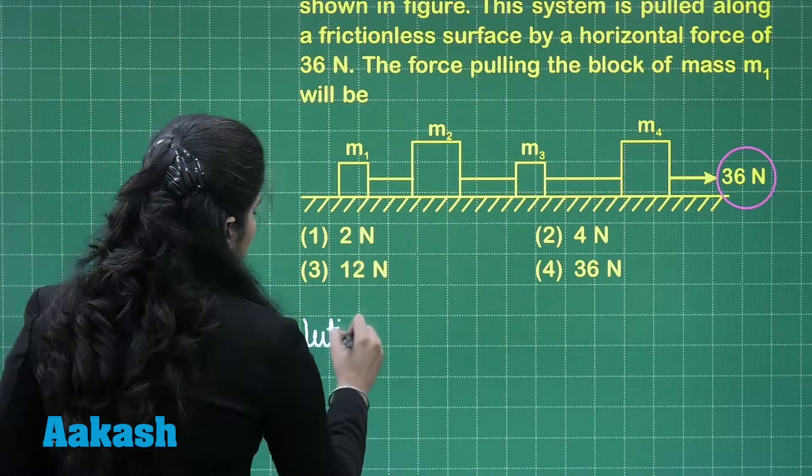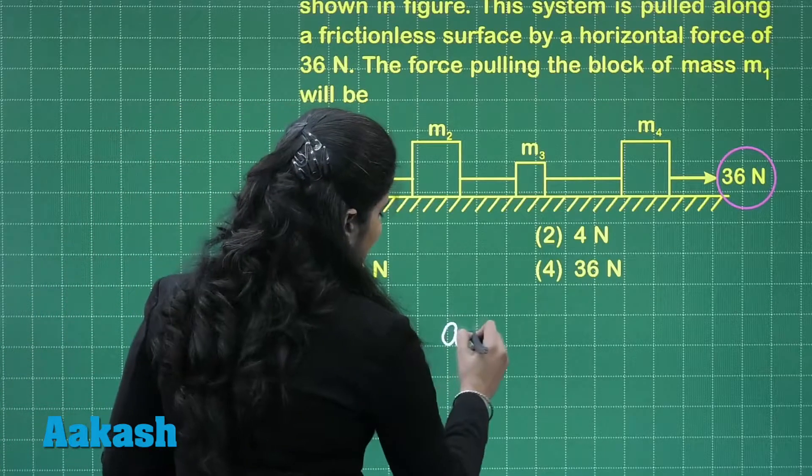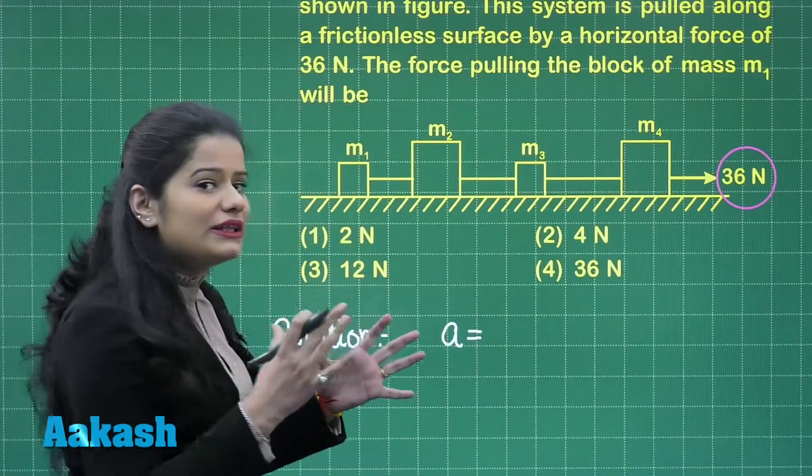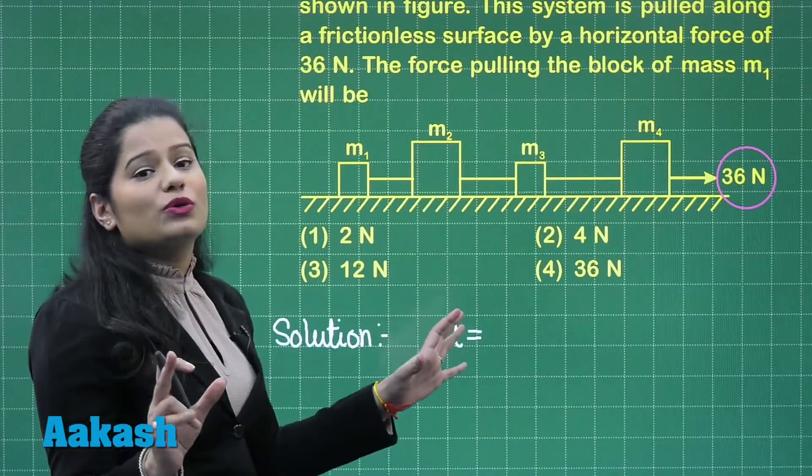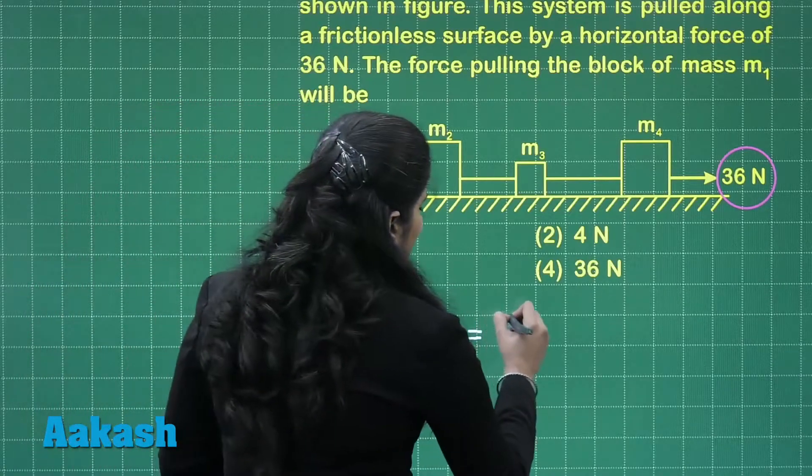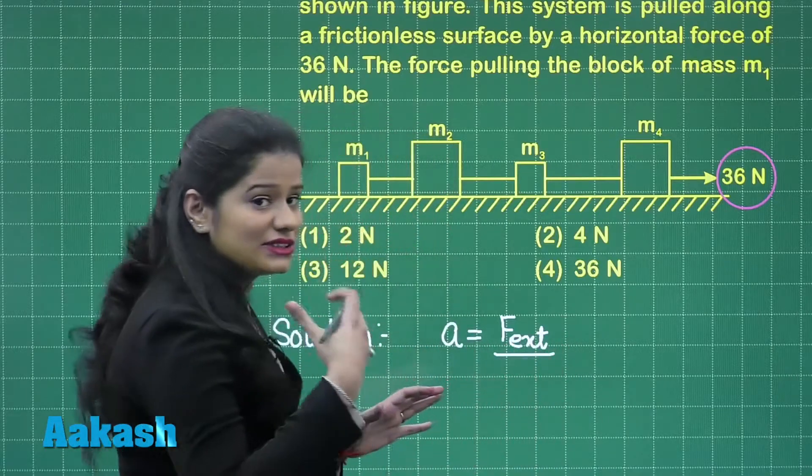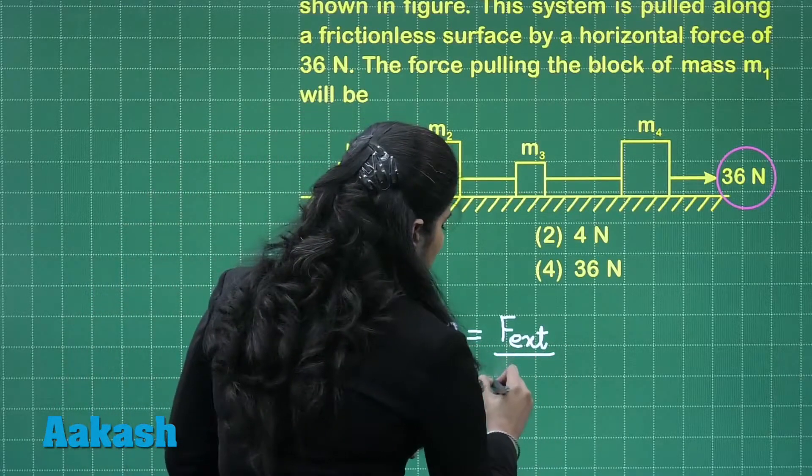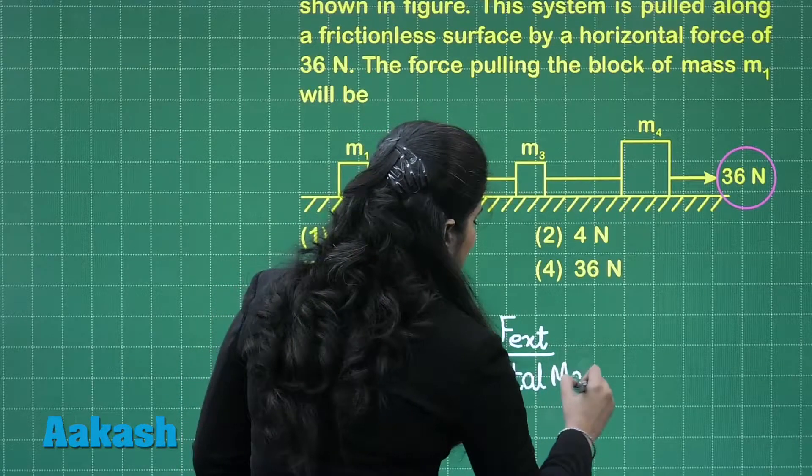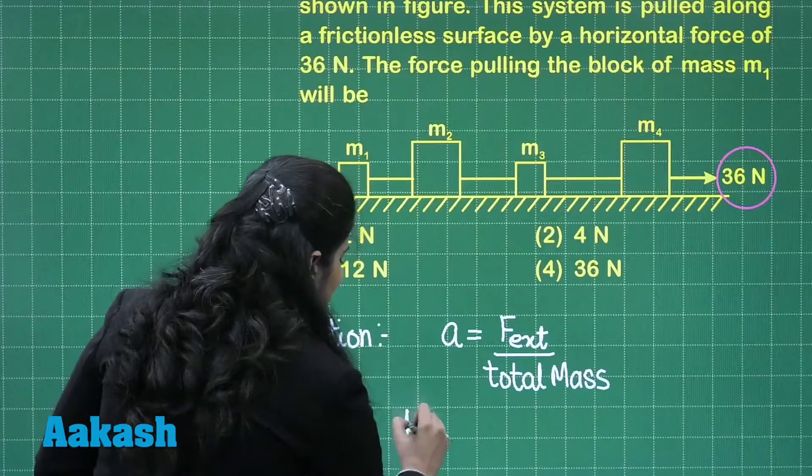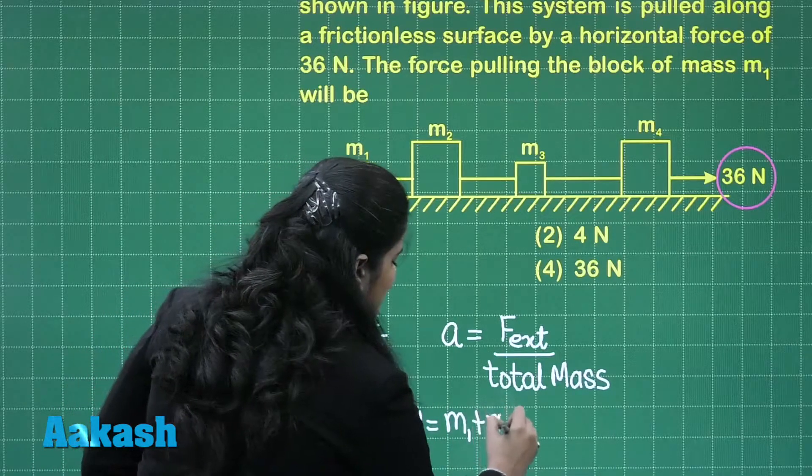So for the further solution of this question what do I need to find out? I need to find out the acceleration A with which all these blocks are moving and again I will say all these blocks will move with the same acceleration and that I can get by dividing the external force with the total mass. The total mass M will be the sum of all the 4 masses.